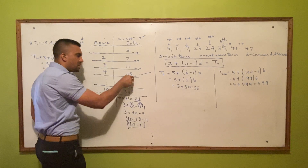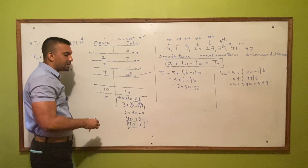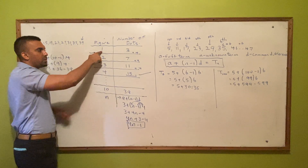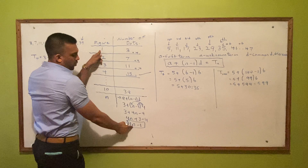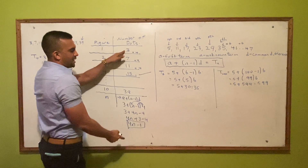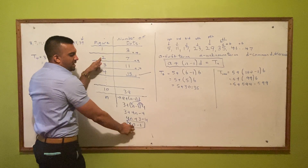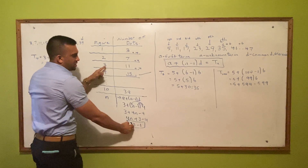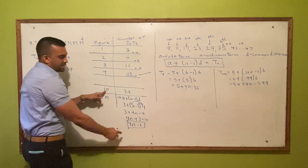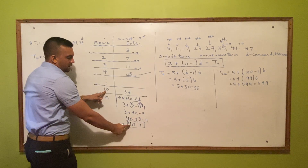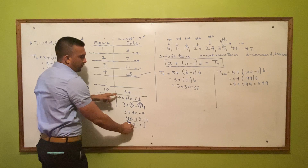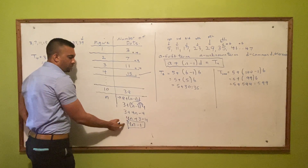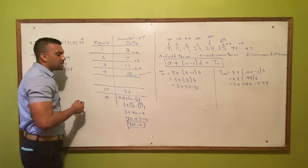So 4n - 1 is the formula we can use to find any term in the sequence. Replace n with 1: 4(1) - 1 = 3. Replace n with 2: 4(2) - 1 = 7. Replace n with 3: 4(3) - 1 = 11. Replace n with 10: 4(10) - 1 = 39. So that nth term expression lets you find any term in the sequence.